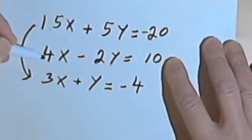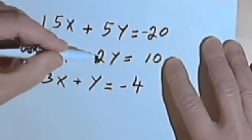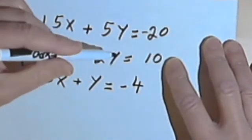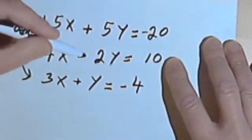And then looking at the second equation, I've got 4x minus 2y equals 10. And all of those are even numbers. So why not divide all of these by 2?